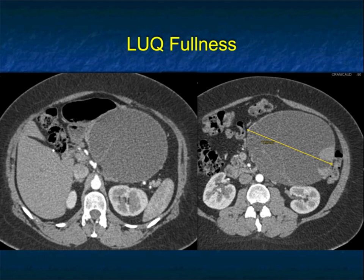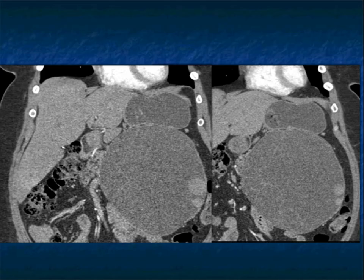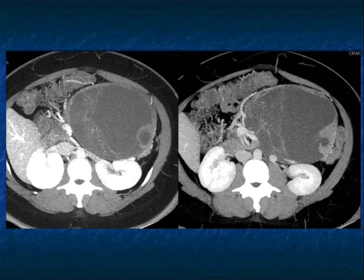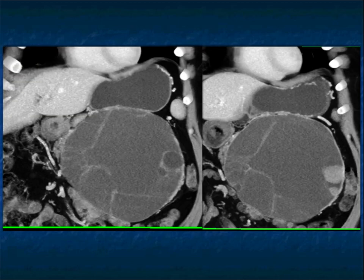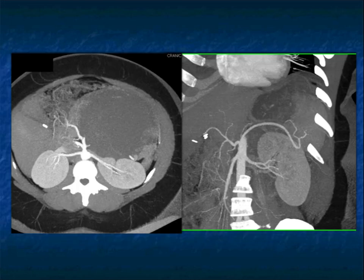Another patient with left upper quadrant fullness — you can see why. There's a mass, 17 centimeters. At about 3 o'clock, the mass has a solid component, and not surprisingly, this was an MCN with high-grade dysplasia. When you look through the lesions — axial, coronal, or 3D — that solid component at 3 o'clock is very concerning. When I see a solid component, I'm always worried about high-grade dysplasia at a minimum, or carcinoma. This is shown nicely on the MIP imaging and volume rendering. From the septations, you're saying MCN; from the solid component, you're really talking about your concern. This patient would surely get a distal pancreatectomy and splenectomy. The vessels are not invaded — you can see the splenic artery is stretched. Classic with MCN: vessel displacement but not vessel invasion.